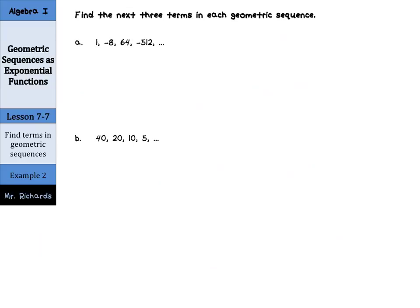Now we're going to find the next three terms in each geometric sequence. Our first step is to find the common ratio. If we have 1, -8, 64, and -512, to get from -512 to 64, we can write that as -512 over 64, and this simplifies to -8. Let's check the next ones as well. 64 over -8 simplifies to -8. And -8 over 1 simplifies to -8. So we have a common ratio of -8.